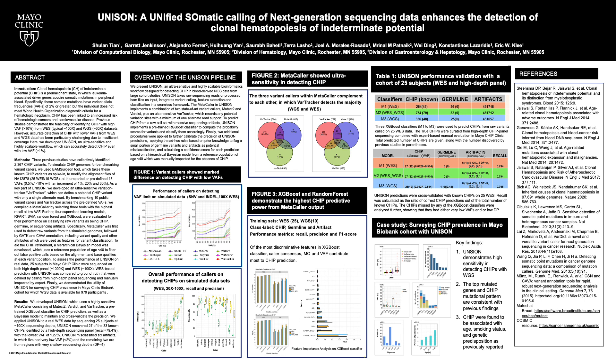The next step was to explore a machine learning approach to distinguish true CHIP variants from the massive raw variant calls. We assessed four supervised machine learning models, and among them XGBoost and Random Forest demonstrated the highest predictive power from the ensemble caller output.